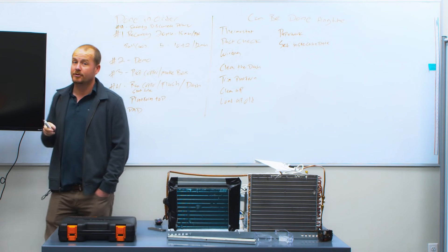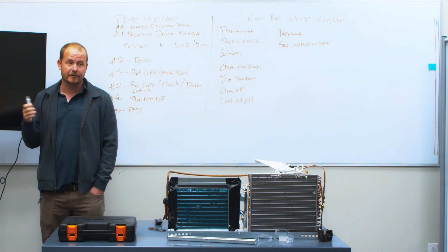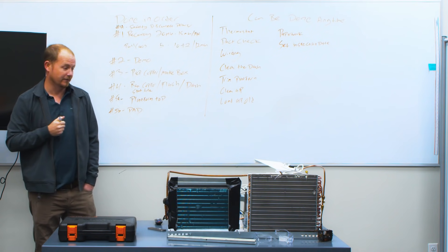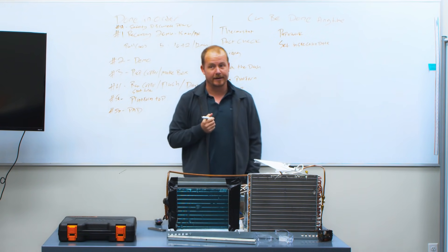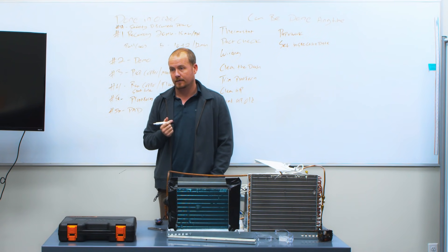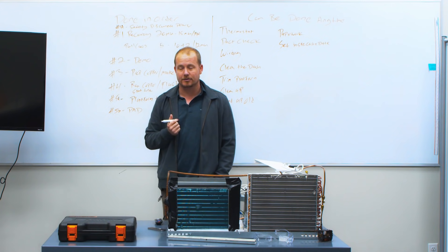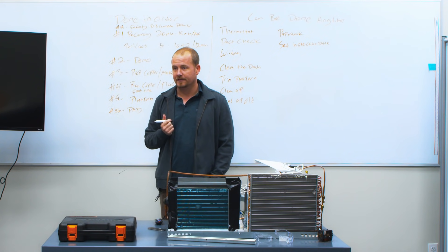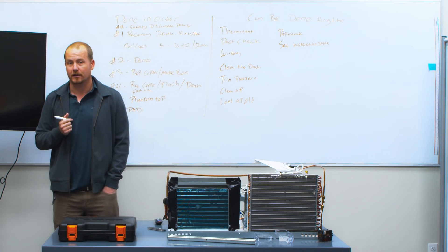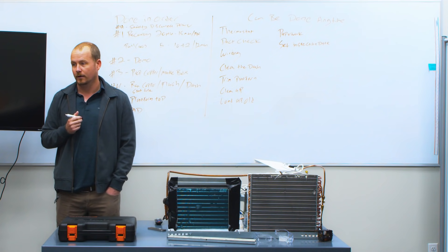The easiest way to charge is when it's under vacuum — go ahead and weigh in that amount into the liquid line before you even open the refrigerant lines. Why do you weigh into the liquid line and not the suction line? Because you're putting in liquid form, and if you put it in the suction line it'll sit right at the suction of the compressor, get pulled in, and potentially flood it — which you definitely don't want.